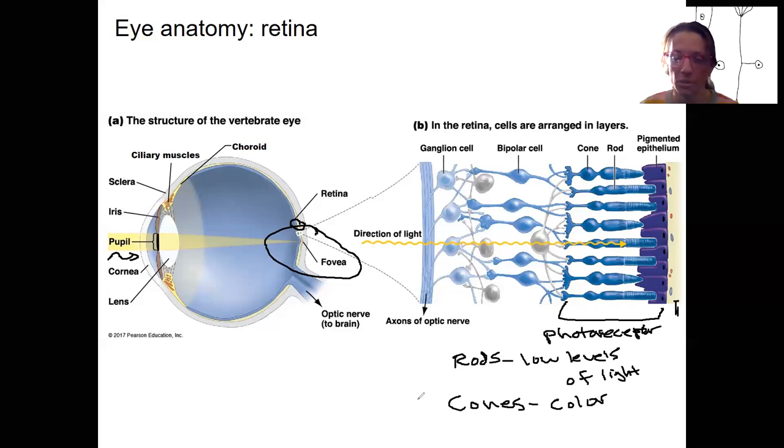There are three types of cones I'll come back to as well that allow you to see different colors. So three types of cones, one type of rod.